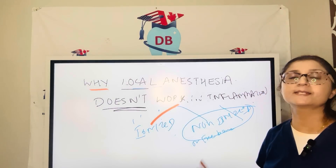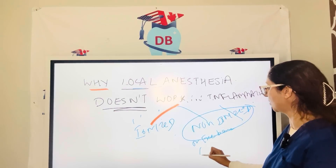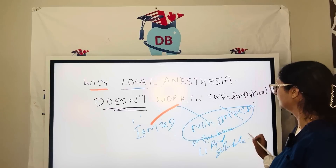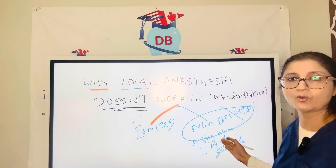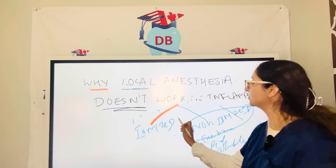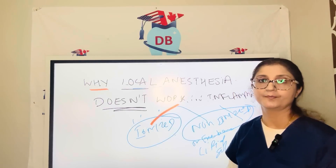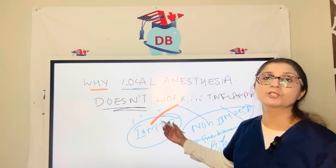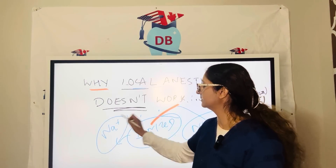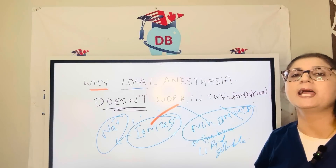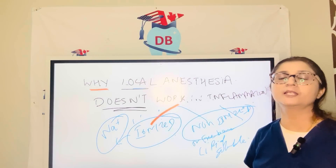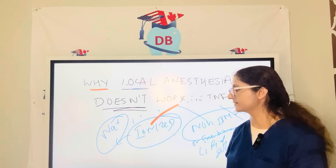The non-ionized, or freebase, form penetrates the nerve cell membrane because it is the lipid-soluble form. Once the non-ionized form penetrates the nerve cell membrane and enters the nerve cell, it converts to the ionized form. This ionized form blocks the sodium-gated channel, blocking the action potential, so nerve conduction is inhibited and you don't feel sensation.